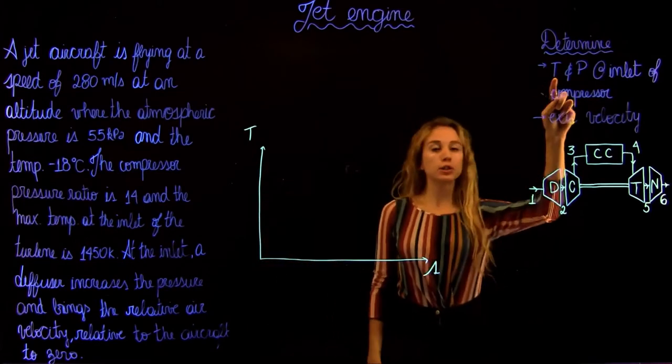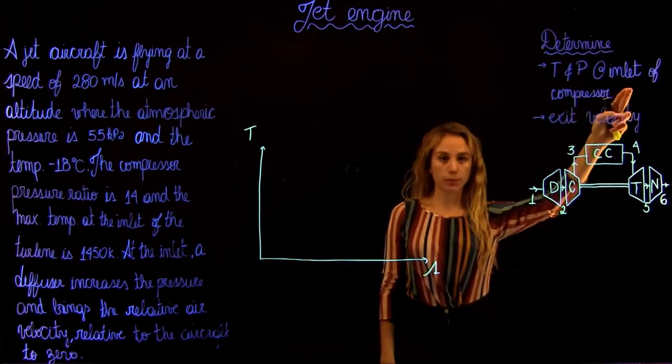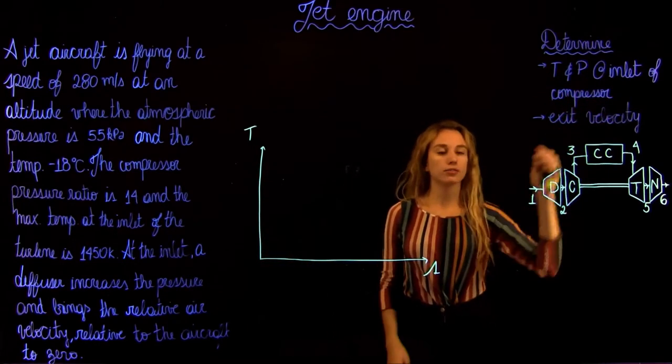We have a compressor ratio of 14 and the maximum temperature is 1450 Kelvins. We are first asked to find the temperature and the pressure at the inlet of the compressor, and then to find the exit velocity.